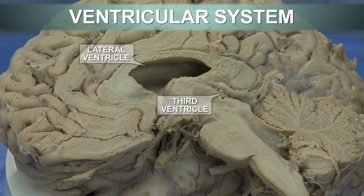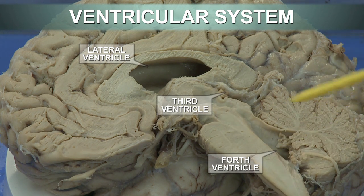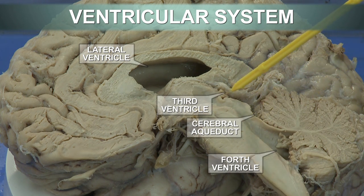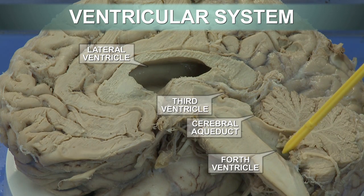The ventricle which is at the level of the cerebellum and brain stem is the fourth ventricle. And finally, the cerebral aqueduct is the aqueduct which connects the third to the fourth ventricle.